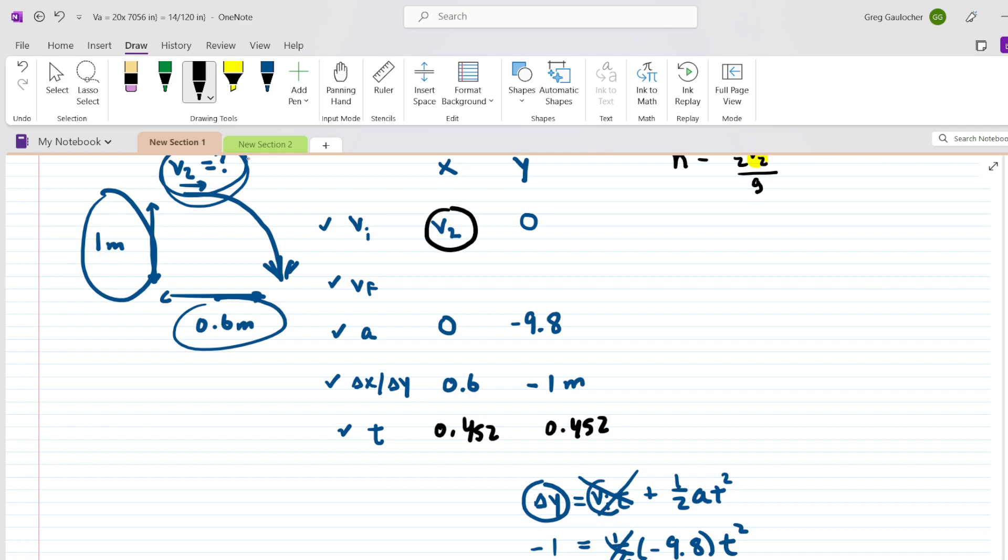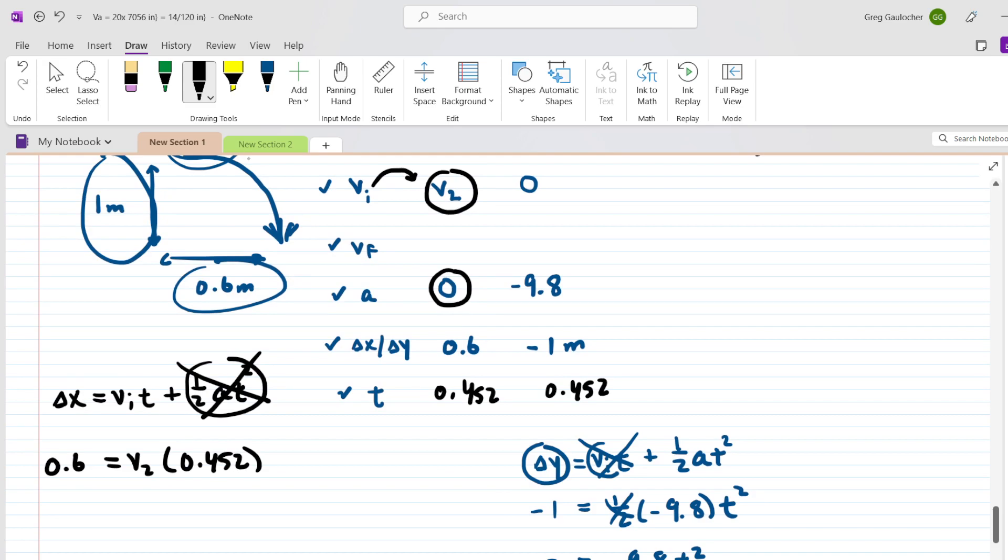Now, remember, we're trying to find v2. This is going to be relatively easy now because all we need to do is use that same equation, but this time in the x direction. And what's nice about this equation is that it contains an acceleration term, but in the x direction, the acceleration was 0. So this entire term drops out. And then we can fill in our delta x, which was 0.6 meters. We're looking for that initial velocity. Remember, we symbolize the initial velocity in the x direction as v2, and then the time we just computed. So we can plug that in. Now, dividing both sides of this equation by 0.452 shows us that v2 is approximately 1.33 meters per second.